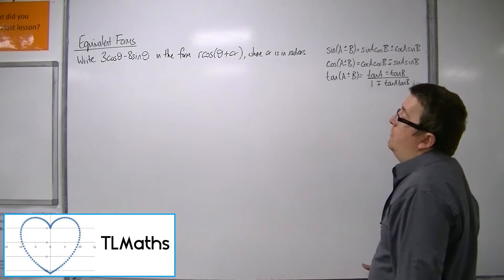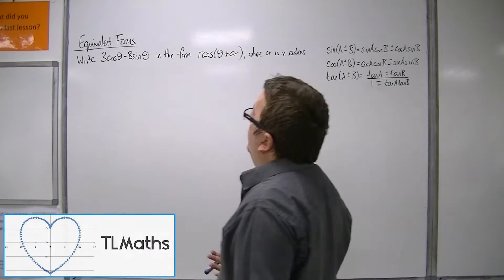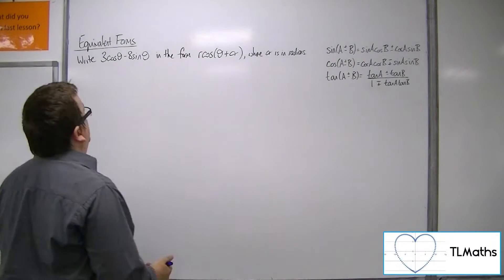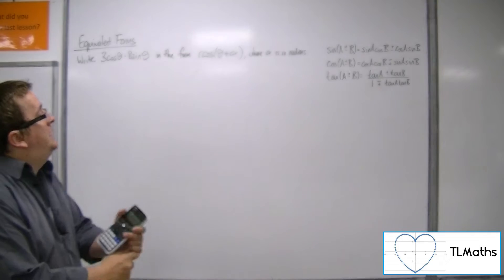So in this video we're going to run with a similar problem. We want to write 3 cos theta minus 8 sin theta in the form of r cos theta plus alpha this time.